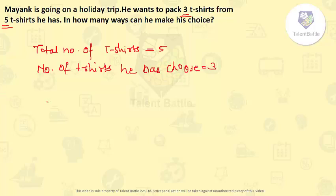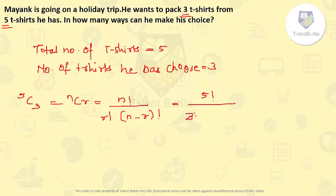So here the total number of ways will be 5C3. That is nCr. So the formula for this is n factorial upon r factorial into n minus r factorial. So after solving this: 5 factorial upon 3 factorial into 5 minus 3 factorial. So this will be 5 factorial upon 3 factorial into 2 factorial. So this will be 5 into 4 into 3 factorial upon 3 factorial and 2 factorial is 2.